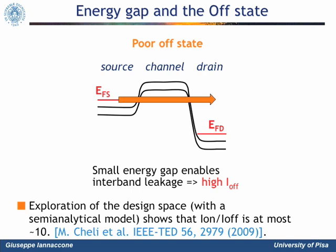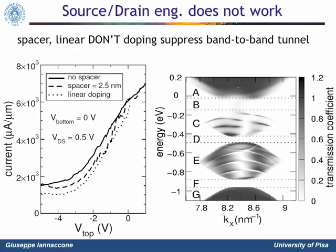We have also explored the design space with a semi-analytical model, but the result is still very bad — the ION over IOFF ratio cannot be increased above 10. Even engineering the source and drain doping profile and adjusting the gate overlap, we are not able to improve things. It's interesting to look at the grayscale map of the tunneling coefficient as a function of energy and transverse wave vector. Superimposing the band edge profile, the white regions where tunneling is zero correspond to the gap regions in the source, channel, and drain. Among them, you can see dark regions meaning that inter-band tunneling is significant.